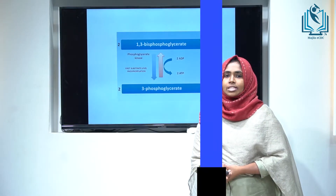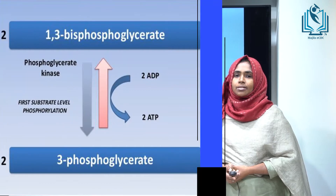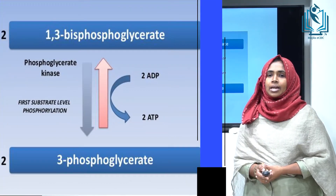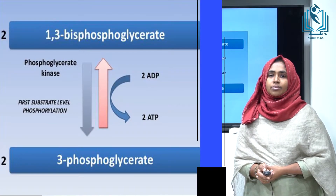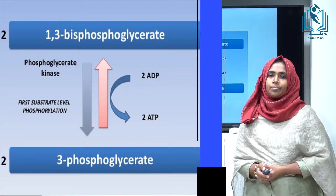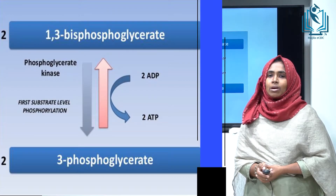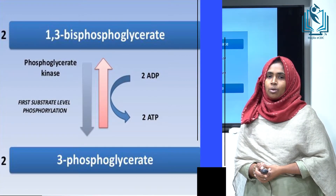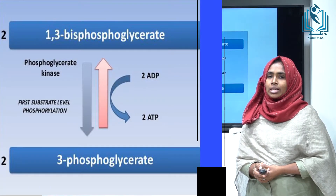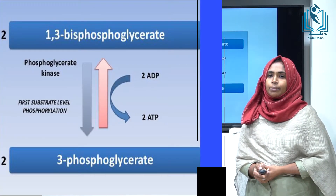In step seven, 1,3-bisphosphoglycerate is converted into 3-phosphoglycerate by the enzyme phosphoglycerate kinase. Since 1,3-bisphosphoglycerate is a high-energy compound, it undergoes substrate-level phosphorylation to produce one molecule of ATP.